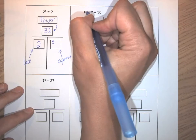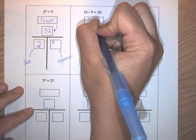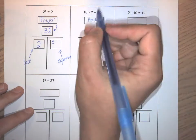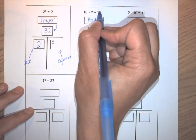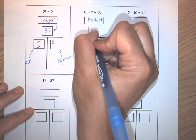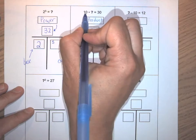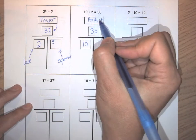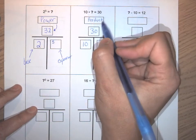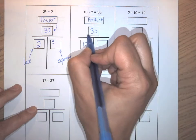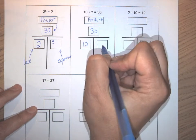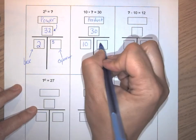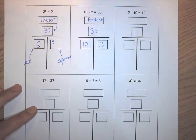Here I have one of the multiplication symbols, so that means I have a product relationship. I can see I have the product itself because this is the equal sign — the product is 30. I have one factor of 10, and it's the other one that's missing. I can use the inverse relationship of division: 10 times what gives me 30? I can go 30 divided by 10 gives me 3.